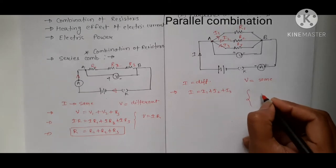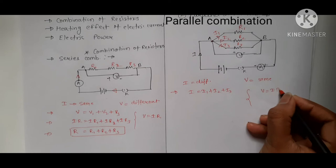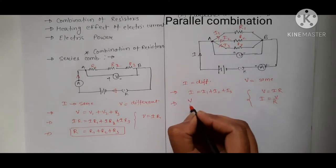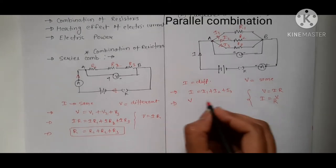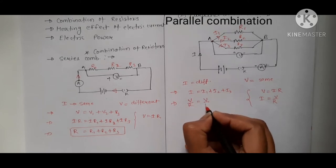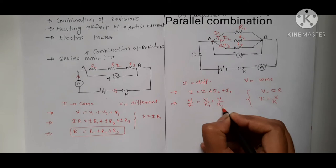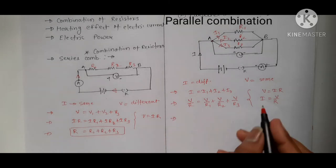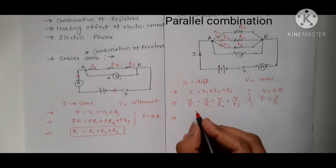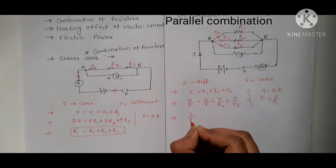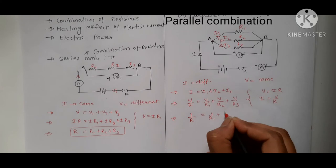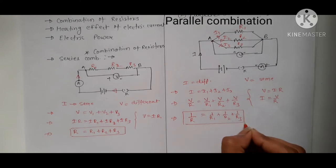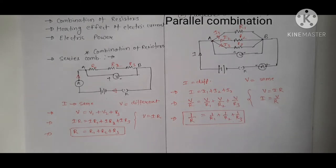Using Ohm's law, V = IR, so I = V/R. Substituting: I = V/R, I1 = V/R1, I2 = V/R2, and I3 = V/R3. Since V is common it cancels out, giving us the formula for parallel combination: 1/R = 1/R1 + 1/R2 + 1/R3.